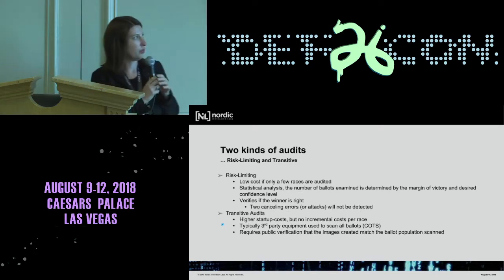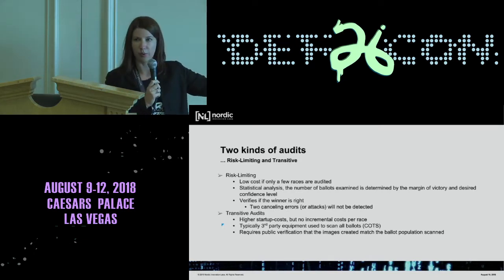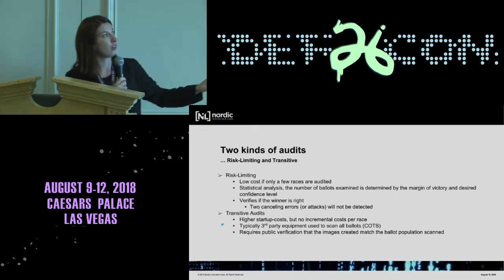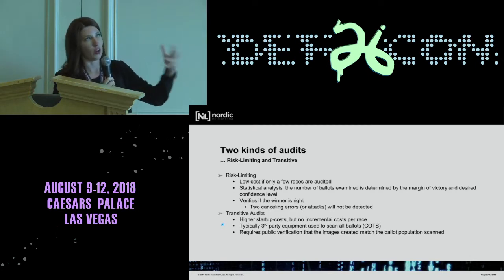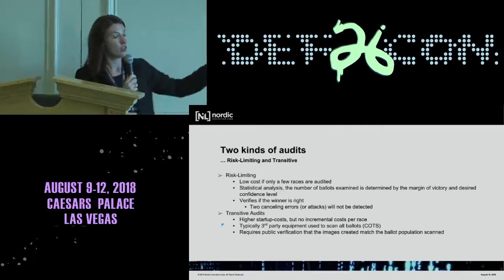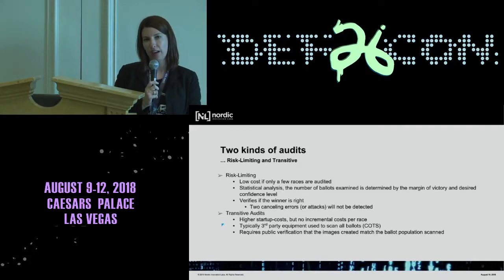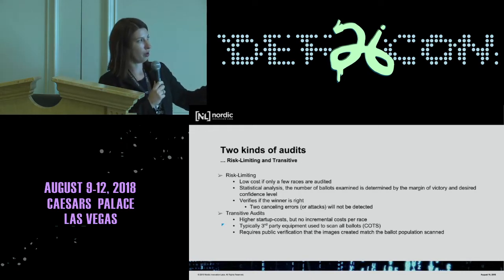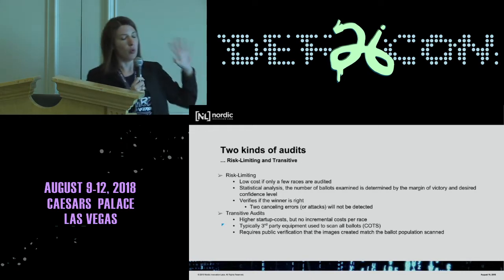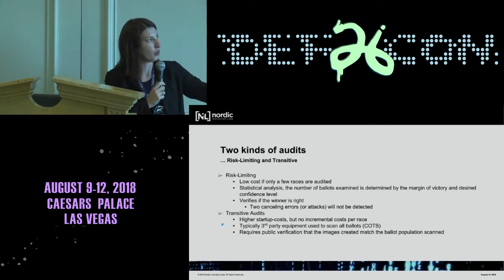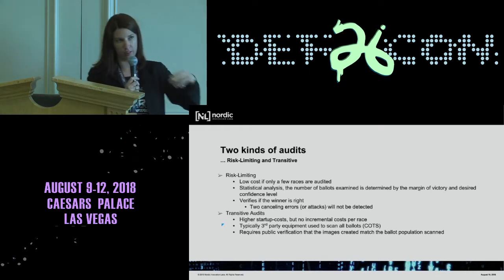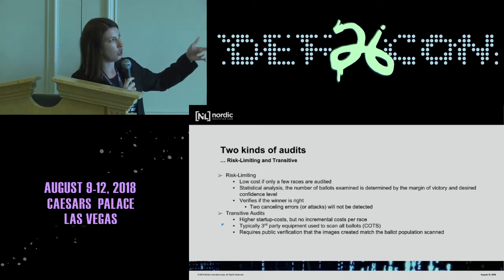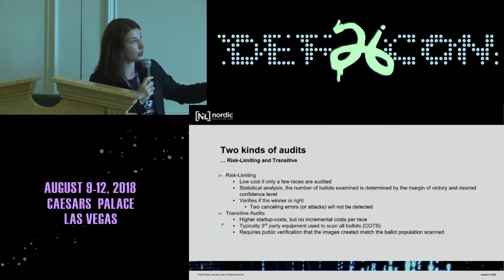The risk-limiting audit versus the transitive: the risk-limiting one is the statistical analysis where you're checking if the winner won. That's not the same thing as a transitive audit. With transitive audits, you take a commercial off-the-shelf high-speed scanner, rerun all of the ballots through a program called OpenCount. It's more expensive up front but has benefits — they're not in competition with risk-limiting audits. You can basically audit all of the races at once.